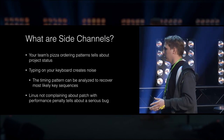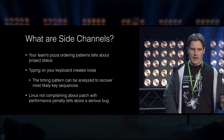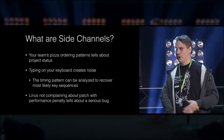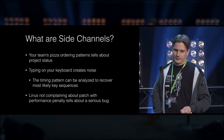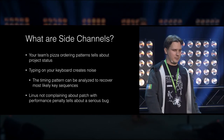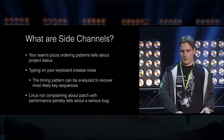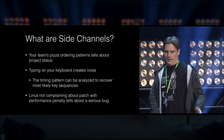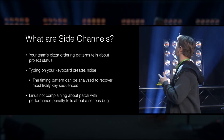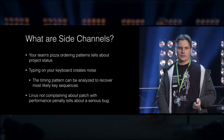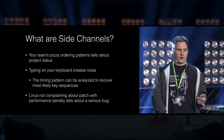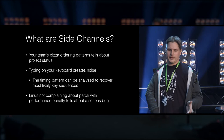We've had a lot of introduction already to side channels, so here are three stupid examples. If your pizza delivery guy was clever, they would know how your company is doing just by looking at how you order pizza — panic pizza orders would tell them to short your stock. If somebody listens to you typing on your keyboard, they can guess the most probable key pattern. And recently there was a side channel where Linus Torvalds was complaining about a patch to the Linux kernel with a serious performance penalty — that was related to the Meltdown side channel.